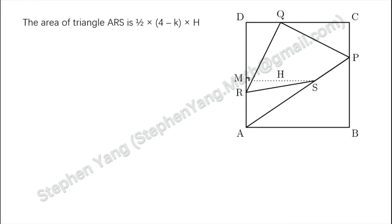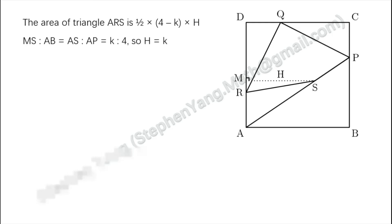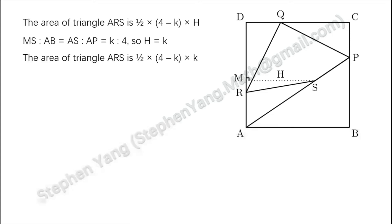If we make a line that is perpendicular to AD and passes through S, as shown in the diagram, then MS would be the height of triangle ARS. So the area of triangle ARS equals one half times (4 minus K) times H. We know that MS over AB equals AS over AP, and AS over AP equals K over 4, so H equals K. Therefore the area of triangle ARS is one half times (4 minus K) times K.